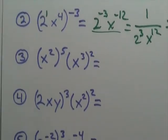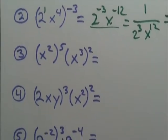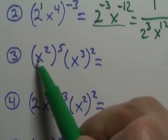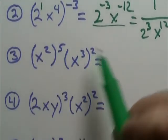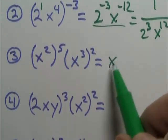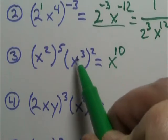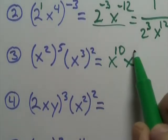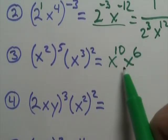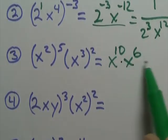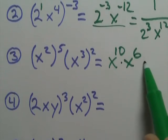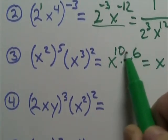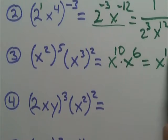On number 3, that's going to be x to the 2 times 5, that's 10. x to the 3 times 2, that's 6. And that equals x to the 6, and that equals x to the — add the exponents — 10 and 6 is 16.